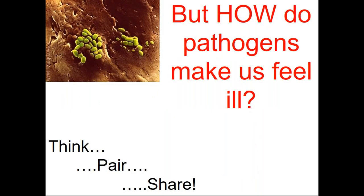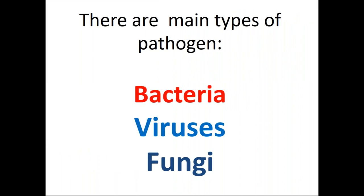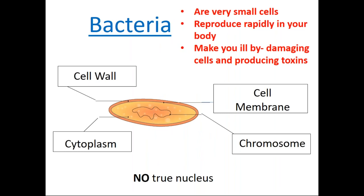But how do pathogens make us feel ill? There are three main types of pathogens: bacteria, viruses, and fungi. Bacteria is a very small organism. It can reproduce rapidly in your body and will make you ill by damaging cells and producing toxins.